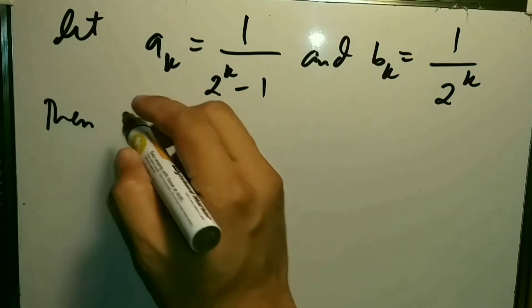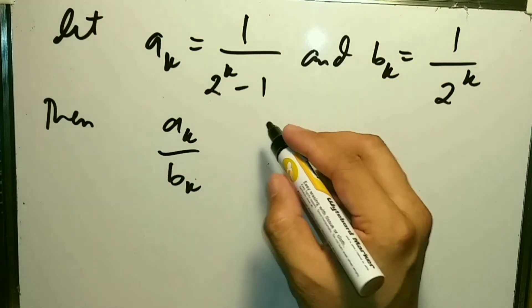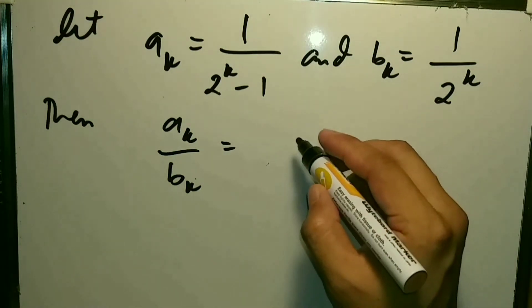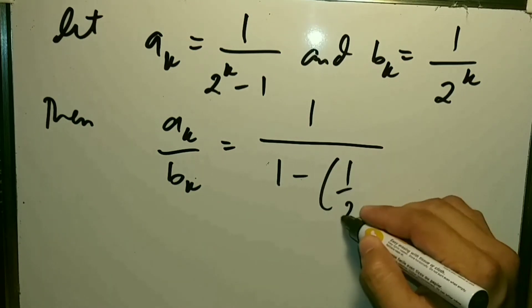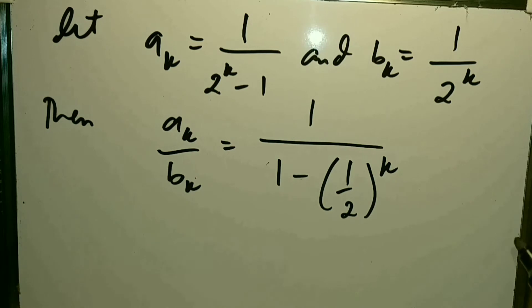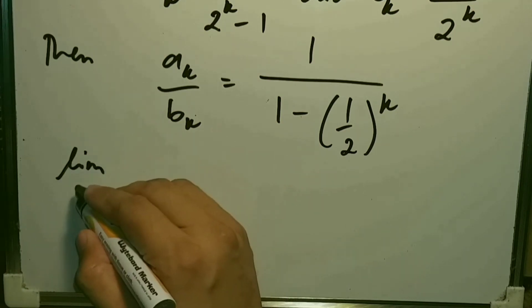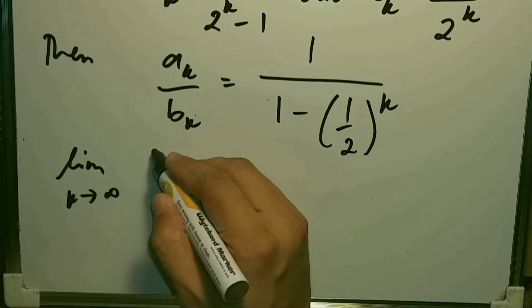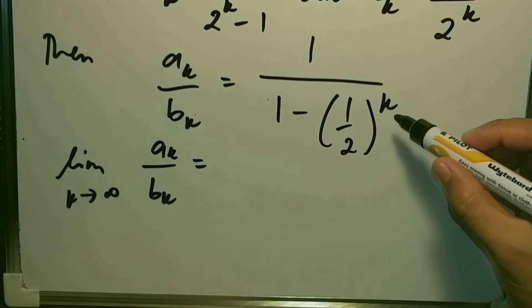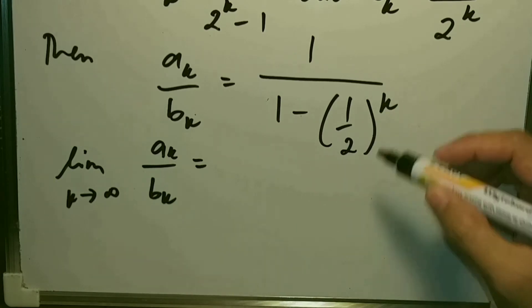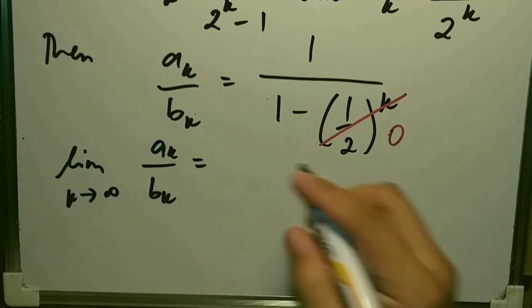If we get the ratio of a_k and b_k, we get 1 / (1 − 1/2^k). Then if we take the limit as k approaches infinity of a_k / b_k, the term 1/2^k goes to 0, so we have 1/1, which is simply 1.